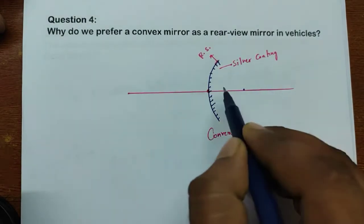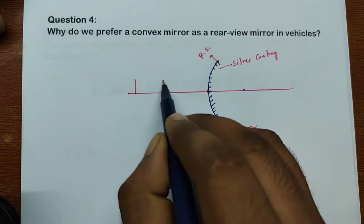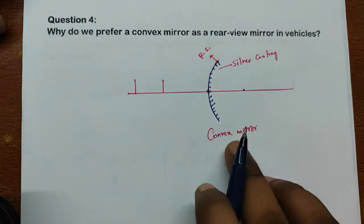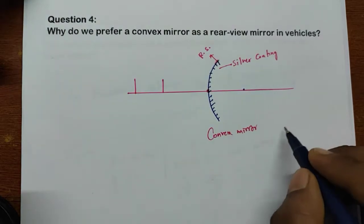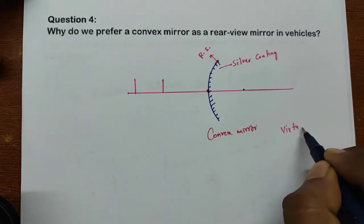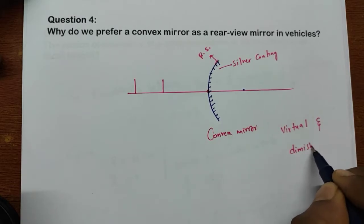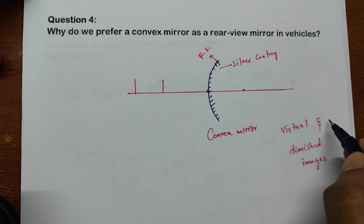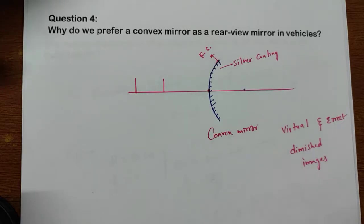Wherever you keep the object — here or here — it doesn't matter. The convex mirror always forms virtual and diminished images. Virtual, erect, and diminished images.